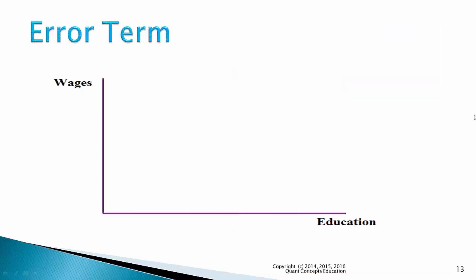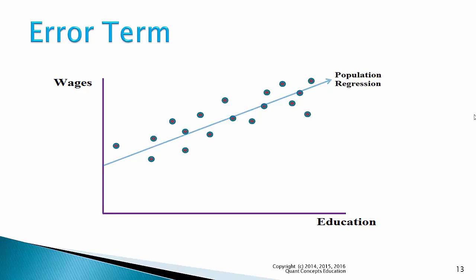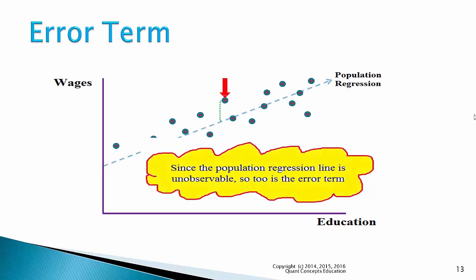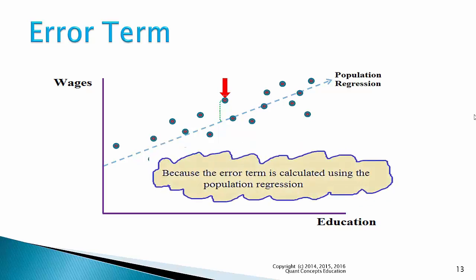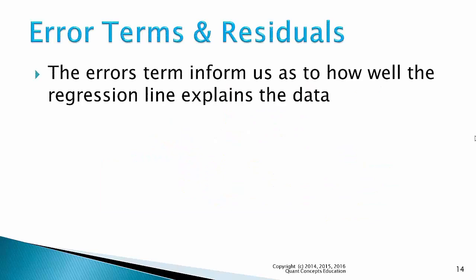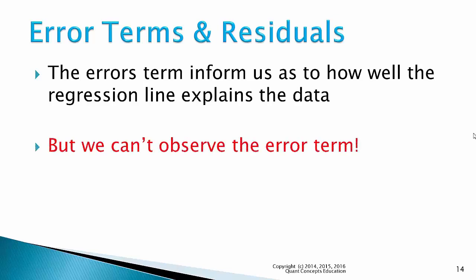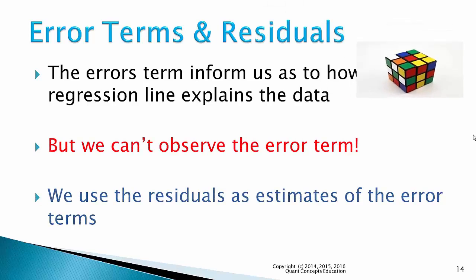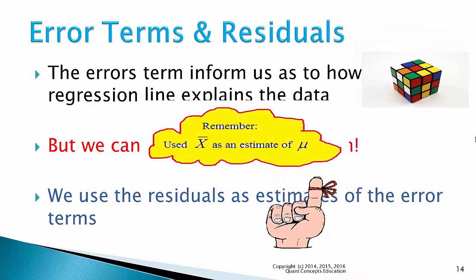I'd like to now introduce the error term. Suppose we have the entire population on the graph and let's imagine the population regression line — I say imagine because in reality the population regression line is not observable. Similar to the residual, the error term is the difference between the actual wage and the population regression line. However, since the population regression is unobservable, so too is the error term. The error term informs us as to how well the regression explains the data. Large error terms mean the model isn't great at explaining the data, while small error terms mean it's a good model. We can use the residuals as estimates of the error terms, just like how we use the sample mean as an estimate of the population mean.